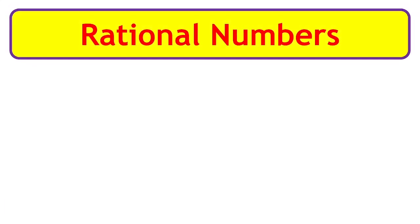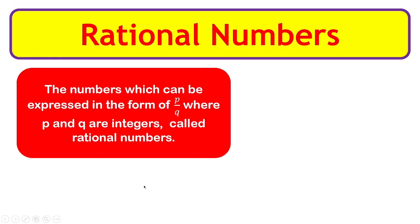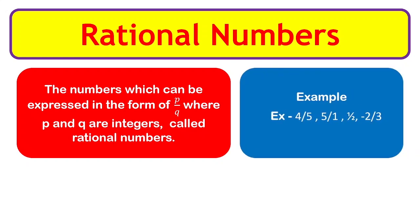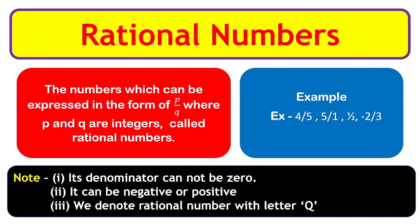Rational numbers: the numbers which can be expressed in the form of p/q — that is, in fractional form — where p and q are integers, are called rational numbers. Examples: 4/5, 5/1, 1/2, and -2/3. Notes: the denominator cannot be 0, and rational numbers can be negative or positive. We denote rational numbers with the letter Q.